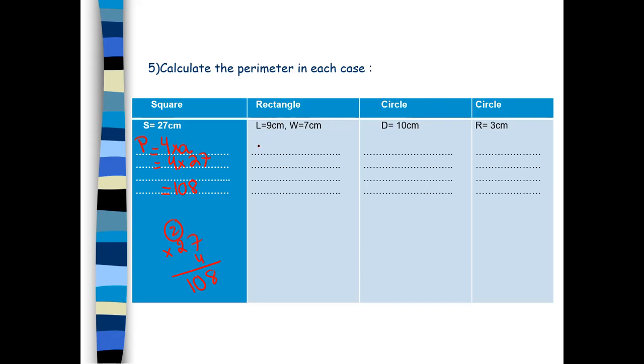Perimeter of a rectangle: P equals 2 times length plus width. Length here in this question equals 9, and the width equals 7. So first we will add 9 plus 7. 9 plus 7 equals 16. Then we multiply 16 by 2. Don't forget, two steps: we add the length and the width, then we multiply it by 2. 16 times 2. 2 times 6 is 12. 2 times 1, 2 plus 1 is 3. So 32 centimeters.